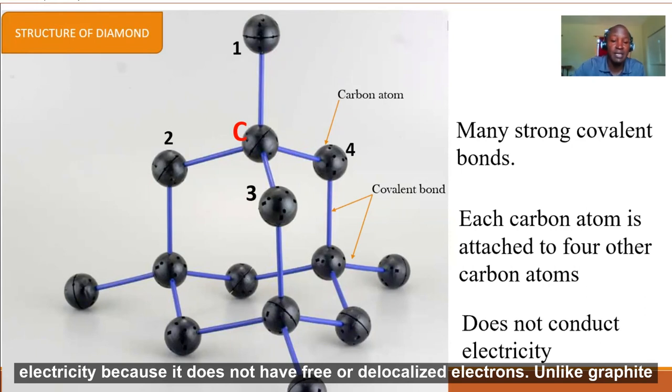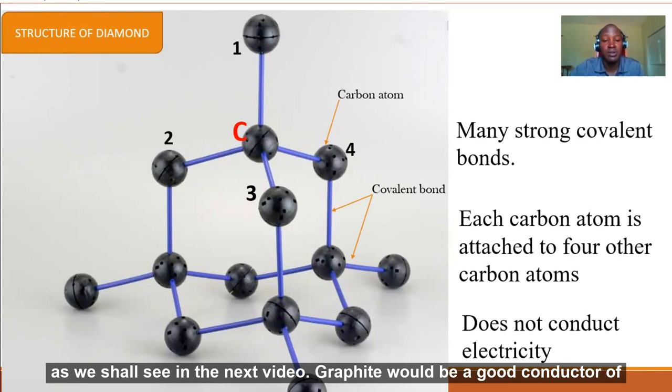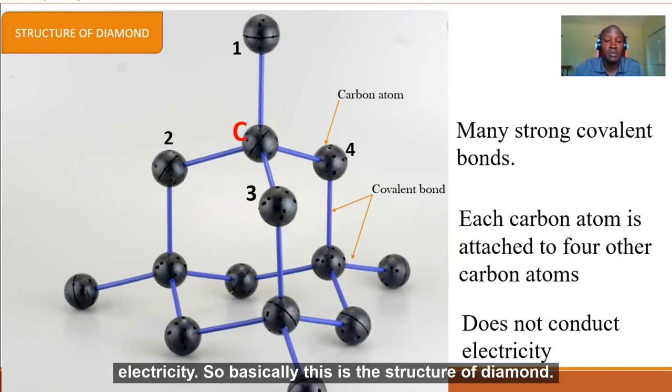Unlike graphite, as you shall see in the next video, graphite would be a good conductor of electricity. So basically this is the structure of diamond.